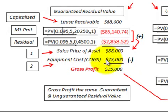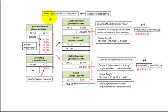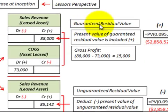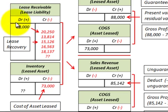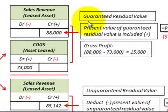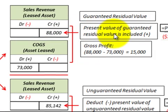Now let's look at recording this sales-type lease at inception from the lessor's perspective, comparing guaranteed versus unguaranteed residual value. In both cases, we record a lease receivable — debit that for the capitalized amount of $88,000. We also credit or reduce an inventory account for $73,000, the cost of the leased asset. For the guaranteed residual value, we credit sales revenue for $88,000, which includes the discounted residual value of $2,858.